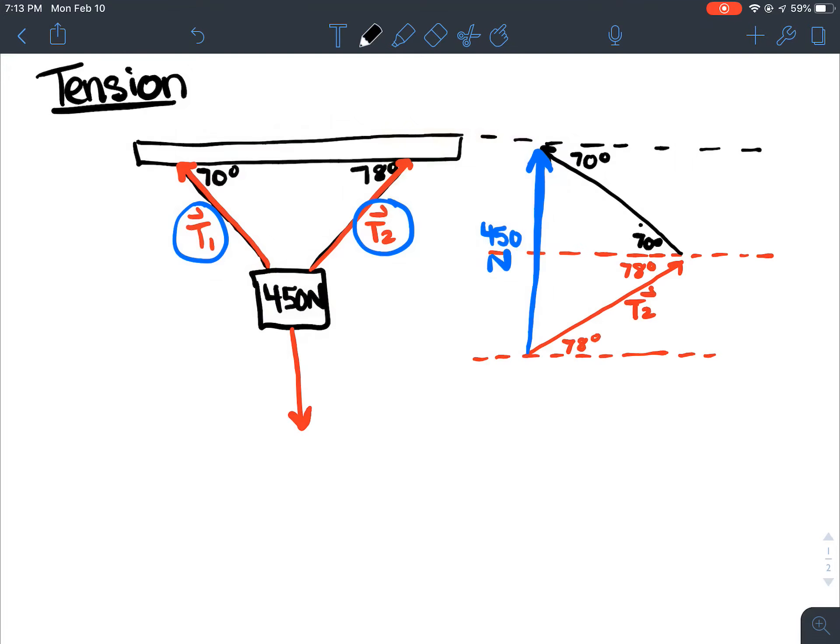Okay, now I know that this total angle right here is going to be 148. I know that these are going to be true right angle triangles, because my 450 is vertical. So since this angle is 70, I know this guy would have to be 20 for the triangle to add up to 180. And if this one's 78, this would have to be 12 degrees. So I can set it up like this. So this is T1, vector T1, this one's T2, and that's the resultant vector in blue.